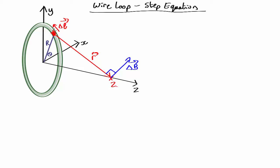Well, the coordinates of this little bit over here are going to be (R cos θ, R sin θ, 0), whereas the coordinates over here are (0, 0, z). So the vector R...